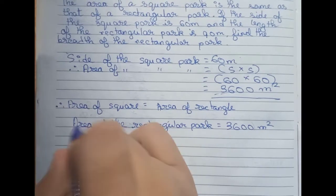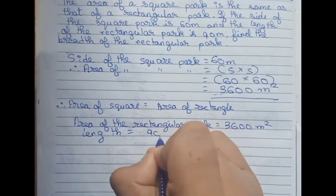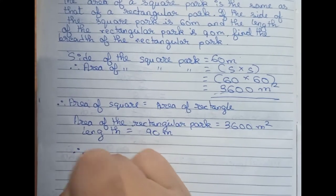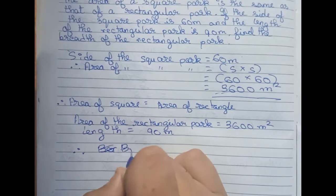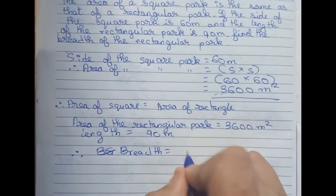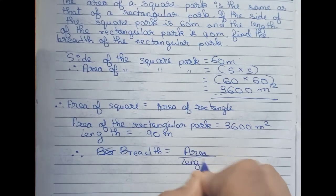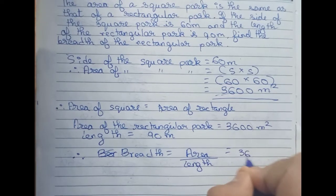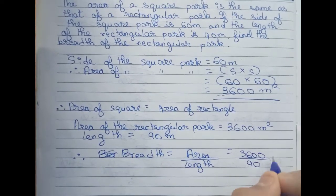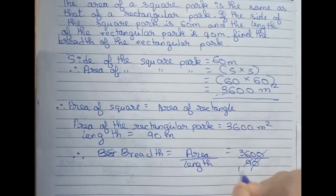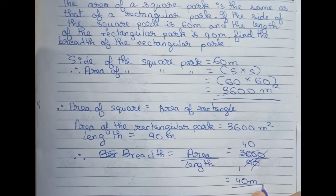The length is given as 90 meters, and we have to find the breadth. Breadth equals area divided by length, so our breadth equals 3600 divided by 90. We simplify by cutting the zeros and dividing 36 by 9, which gives us 40. So breadth equals 40 meters.